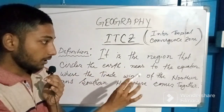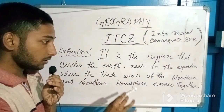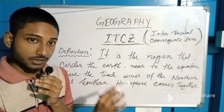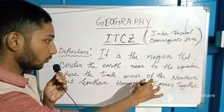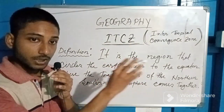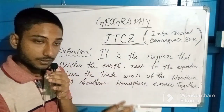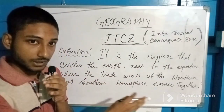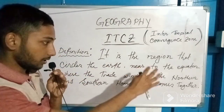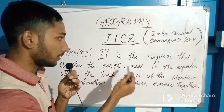It is where the northeastern trade winds and southeastern trade winds converge together, forming a pressure belt nearer to the equator. The two winds — northeast trade winds from the northern hemisphere and southeast trade winds from the southern hemisphere — converge together to form this pressure belt nearer to the equator. That is called ITCZ.